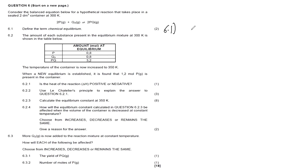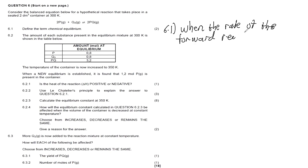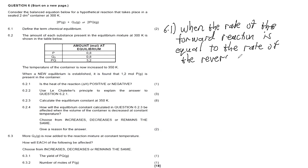Chemical equilibrium is when the rate of the forward reaction is equal to the rate of the reverse reaction. That's our definition for two marks.